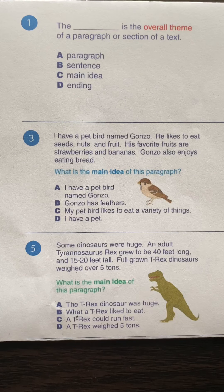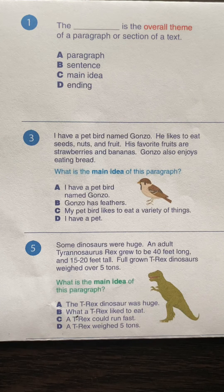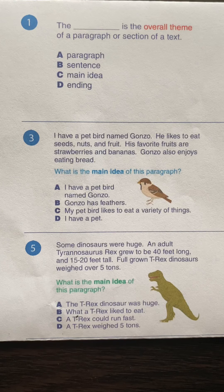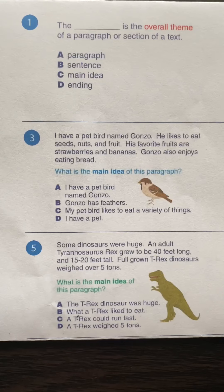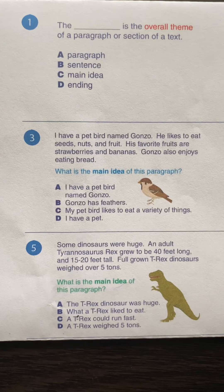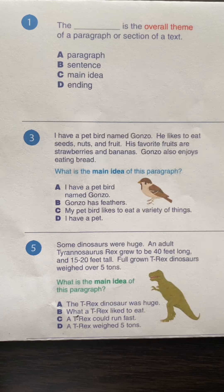Number two: I have a pet bird named Gonzo. He likes to eat seeds, nuts, and fruit. His favorite fruits are strawberries and bananas. Gonzo also enjoys eating bread. What is the main idea of this paragraph? A. I have a pet bird named Gonzo. B. Gonzo has feathers. C. My pet bird likes to eat a variety of things. Or D. I have a pet. The answer is C: my pet bird likes to eat a variety of things.